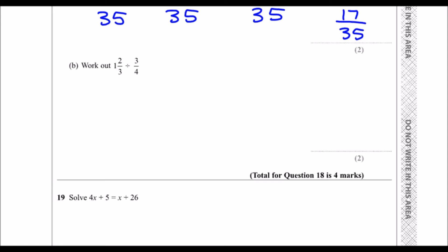Okay, part b. So now we're dividing fractions, so the first thing we're going to have to deal with is this mixed number here. So I've got one whole one and two-thirds. I need to make it into one fraction, so a top heavy one.